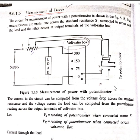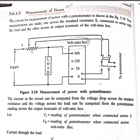The current in the circuit can be computed from the voltage drop across the standard resistance. The voltage across the load is calculated from the volt ratio box output to the potentiometer. There are two readings using this potentiometer: first is VS — the reading when the switch is thrown to the first position connecting standard resistance S — and second is Vr — the reading when the potentiometer is connected across the volt ratio box.